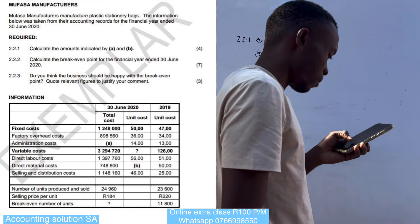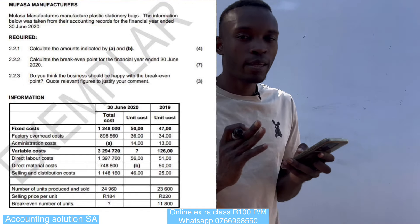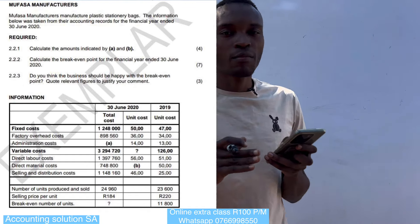For part A, we are looking for administration cost, which is under fixed costs. They give us the total fixed cost of R1 248 000, and we also have factory overheads of R898 560. The omitted one is administration cost, so we get it as a balancing figure — factory overheads plus administration must equal total fixed cost. So we take 1 248 000 minus 898 560, which gives us R349 440.